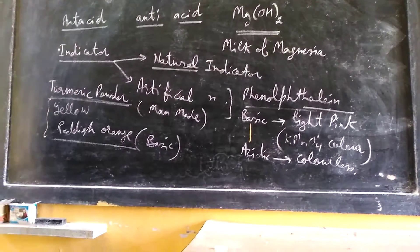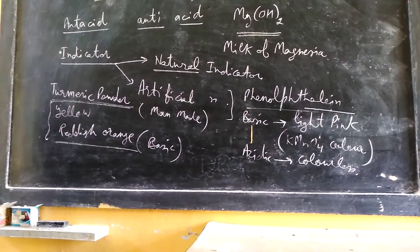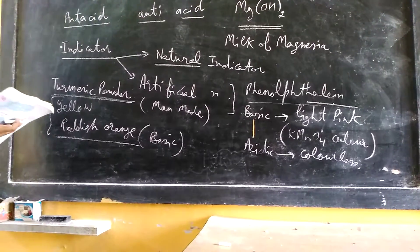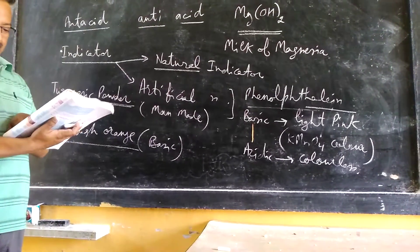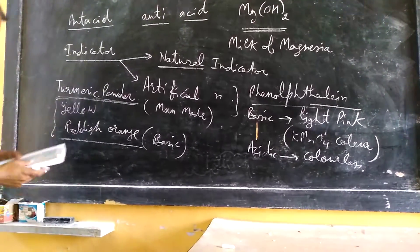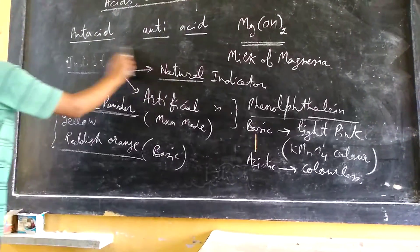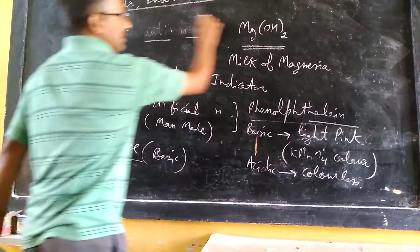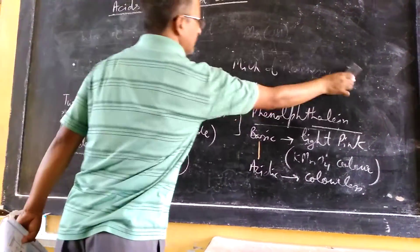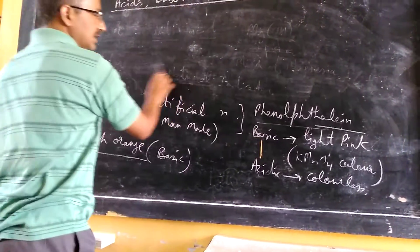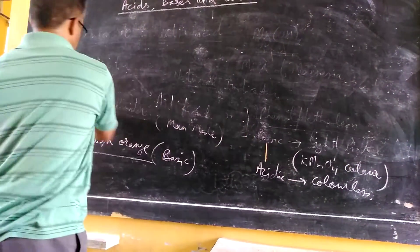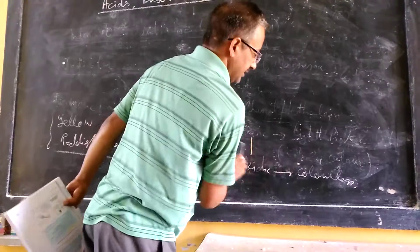Okay so this is the first thing on the very first page of your second chapter. Now in the next page there is one more thing that is also related with indicators. So you can say third type of indicators: they are called olfactory indicators.